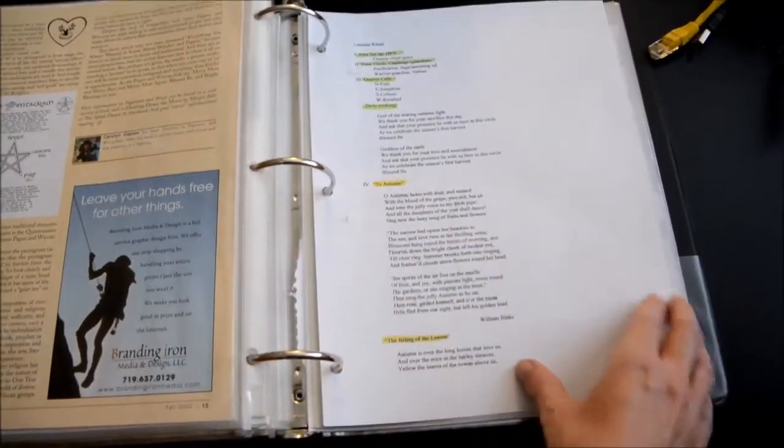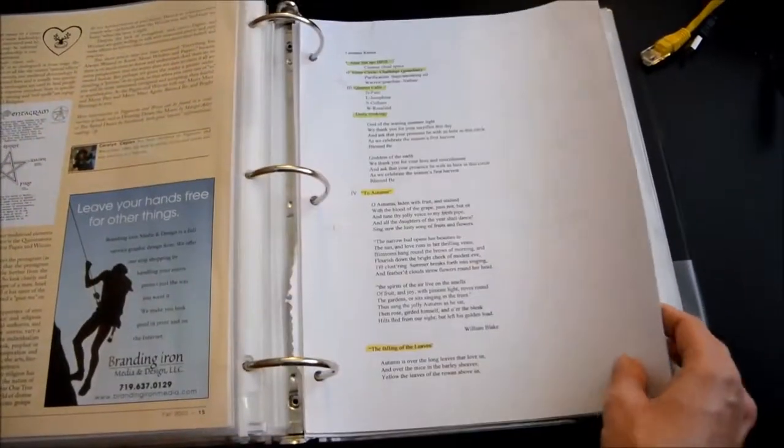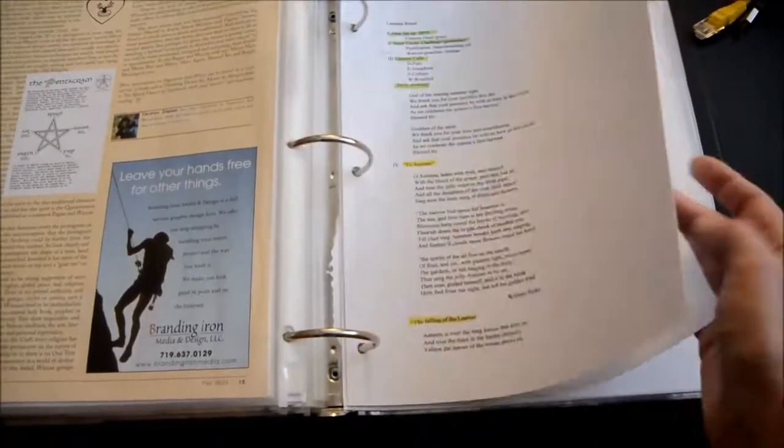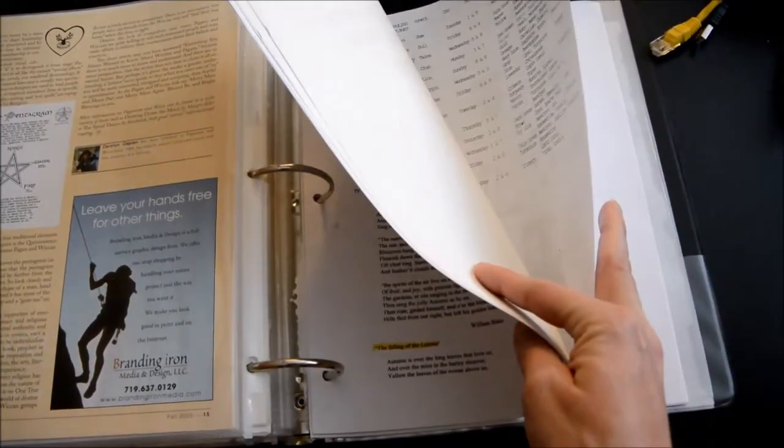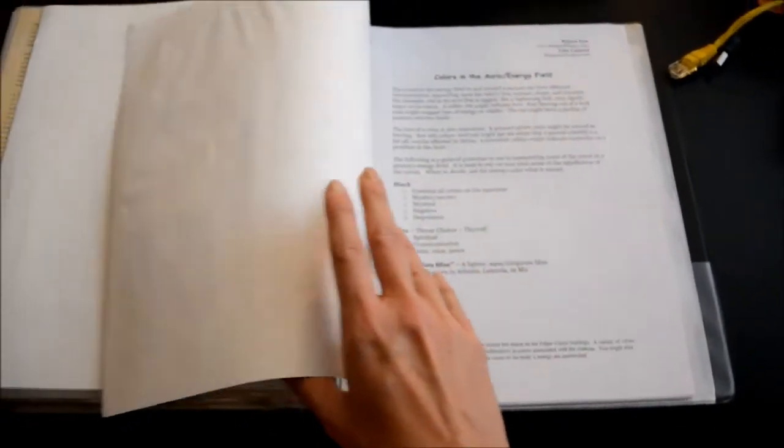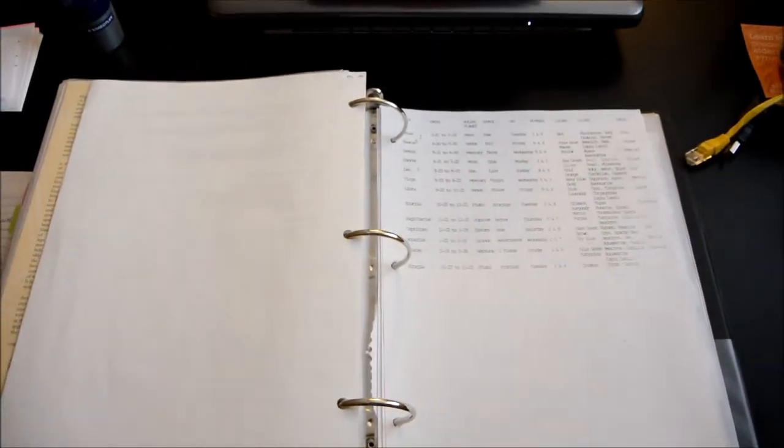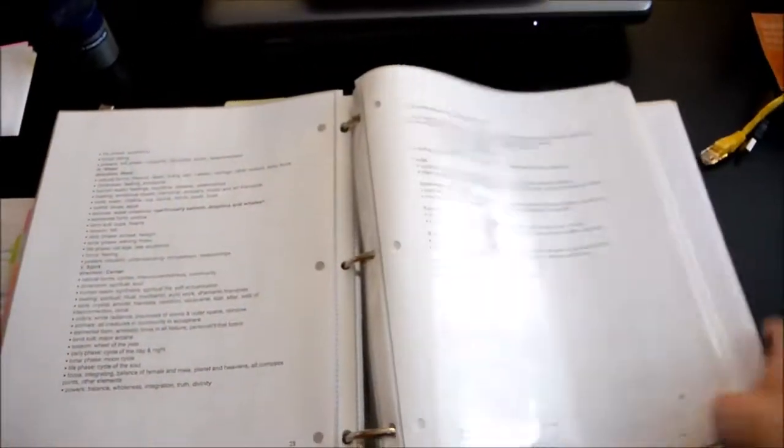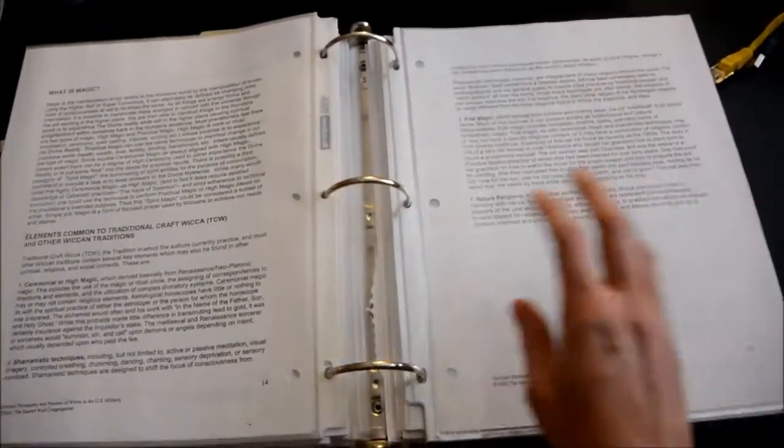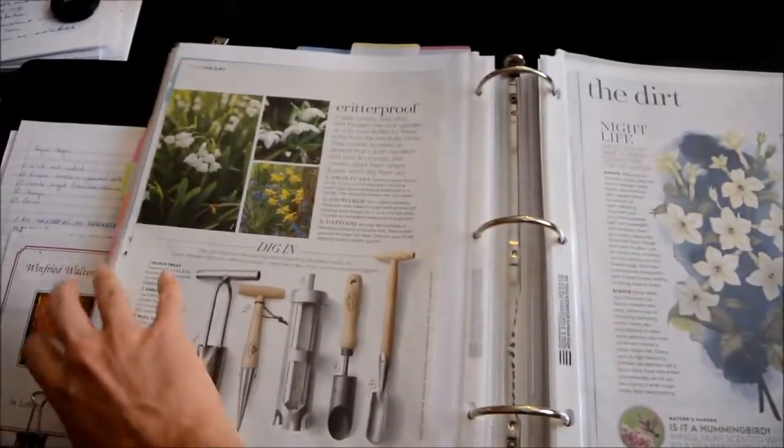These are the last items - a couple of rituals I participated in with the open circle at Fort Carson, correspondences, and more notes. That is my flip-through of my book of shadows.